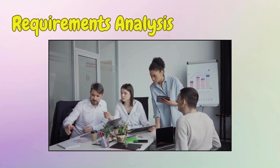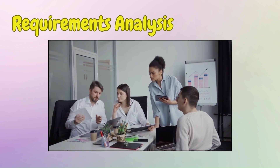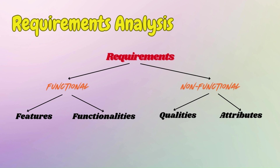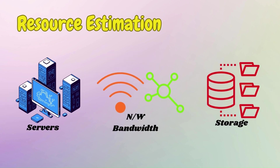The process begins with a thorough understanding and analysis of requirements. Requirements can be categorized into functional requirements — describing specific features and functionalities — and non-functional requirements that specify qualities and attributes like performance and reliability. After grasping the requirements, the next step involves estimating the necessary resources.